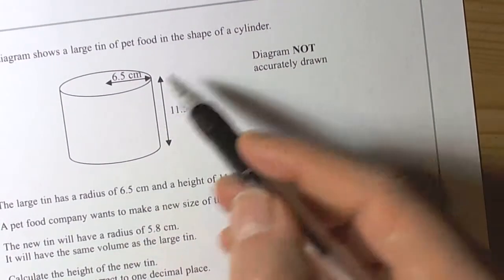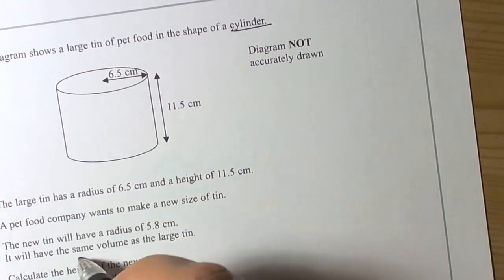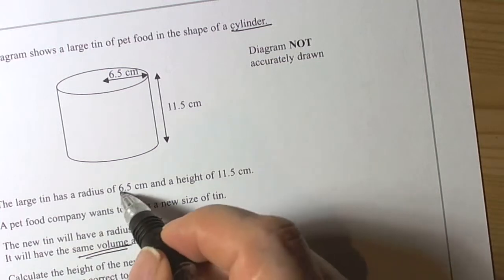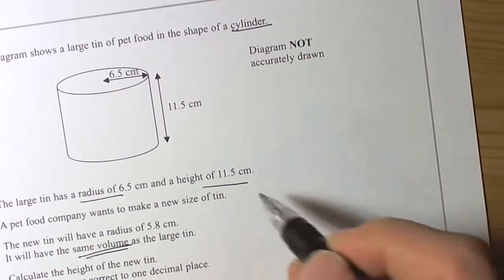This question talks about a cylinder and mentions the idea that we're talking about something having the same volume. It's given us some details that the radius of the large tin was 6.5 cm and the height was 11.5 cm.